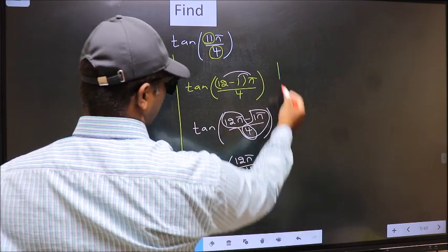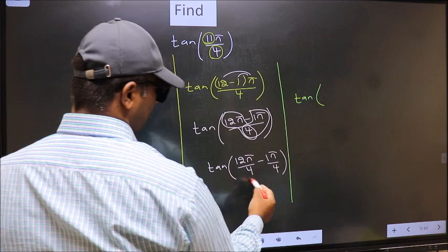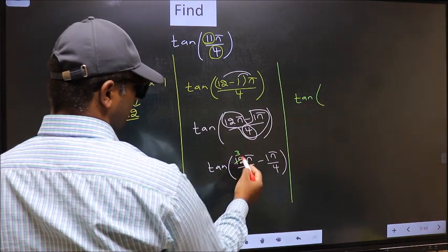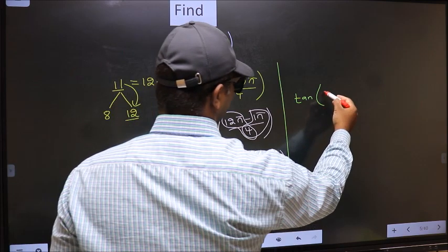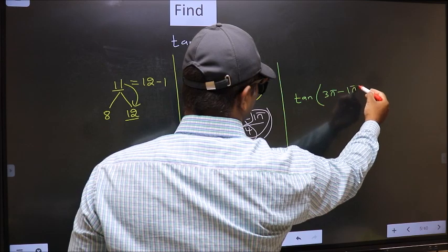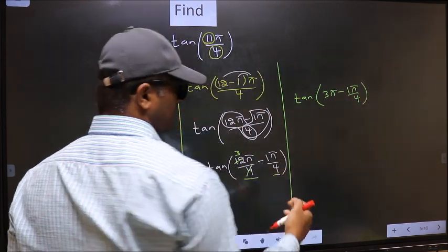Next, tan. Now over here you should cancel 4 ones, 4 threes. So we get 3π minus this no change, 1π by 4.